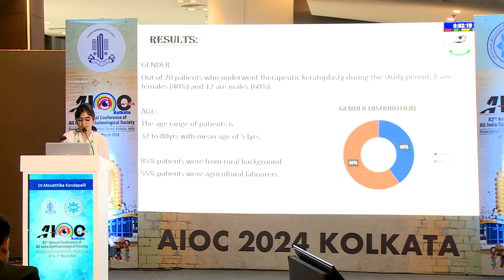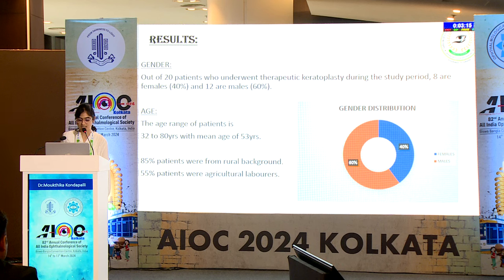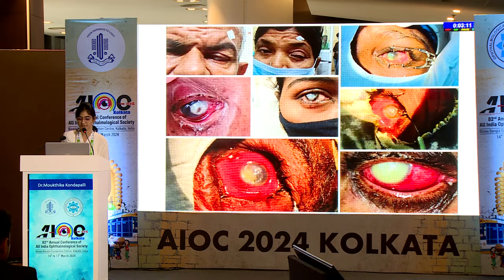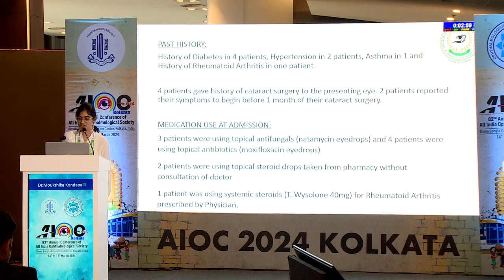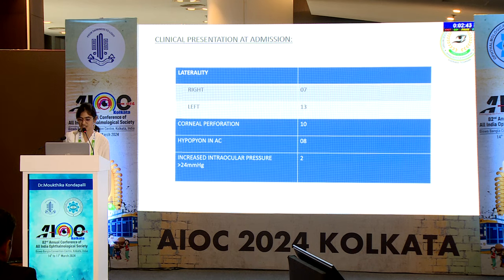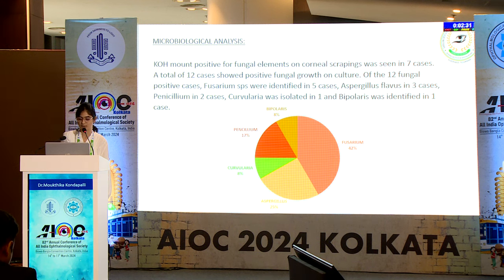All cases were unilateral; right eye was affected in 7, left in 13. Corneal perforation at admission was seen in 10 cases, hypopyon in 8 cases, and secondary glaucoma in 2 cases. Of 20 cases, 12 showed positive fungal growth: 5 Fusarium, 3 Aspergillus, 2 Penicillium, 1 Curvularia and 1 Bipolaris. Pseudomonas aeruginosa resistant to multiple drugs was seen in 2 cases who had cataract surgery in the affected eye less than one month prior and were diagnosed as postoperative endophthalmitis; they received intravitreal antibiotics and vitrectomy before TKP.